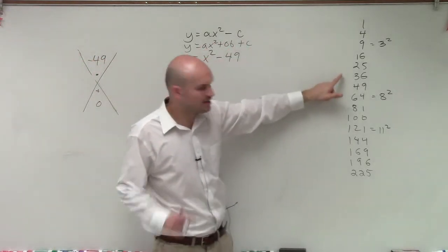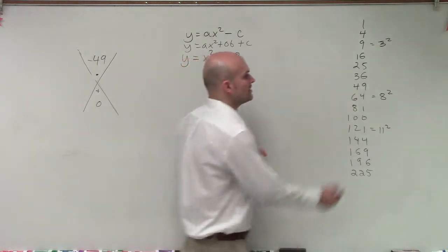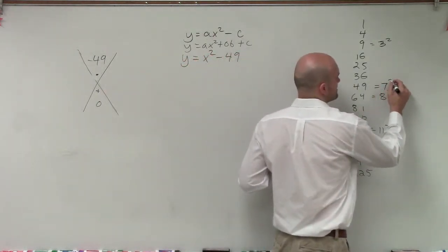So I look at the list of my integer squared numbers. I have up to 15, and you can see that 49 is a square number. So 49 can be rewritten as 7 squared.